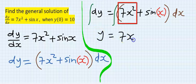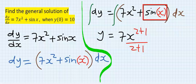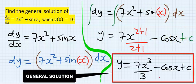If you integrate 7x squared, it's going to be 7x to the 2 plus 1 over 2 plus 1. If you integrate sine x, you're going to get minus cos x, then plus c. This is the general solution of this function.